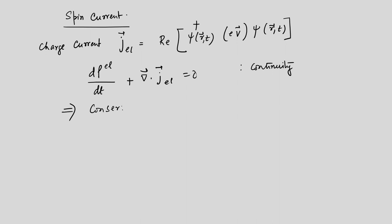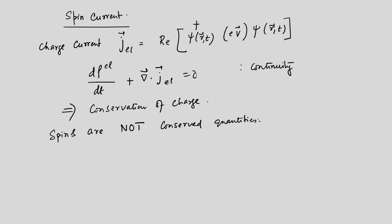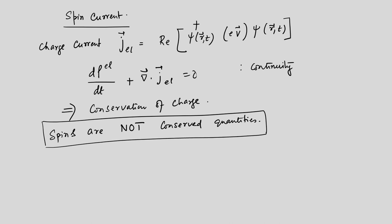As opposed to charge conservation, spins are not conserved quantities. This is an important statement, and it happens because in most of these materials — at least the ones we are talking about — they have spin-orbit coupling. In the presence of spin-orbit coupling, the components of S are no longer good quantum numbers, as we have seen. For example, if you have L dot S, then spins are not good quantum numbers. Another property distinct from the charge current is that the charge current changes sign under time reversal.